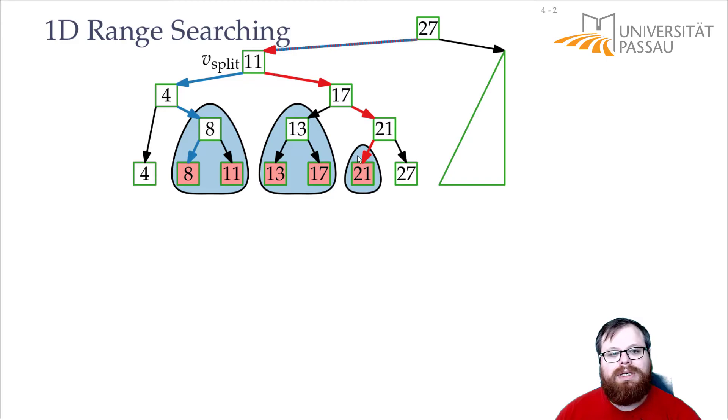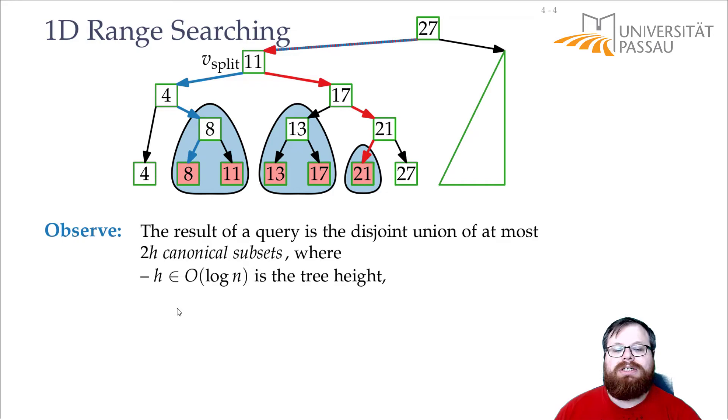So all these sets here we know we have to report. And those we call canonical subsets. And how many of these do we have? At every step that the blue path takes, at every level there might be one of those. And at every level that the red path takes, there might also be one of those. So we have at most 2h canonical subsets, where h is the height of the tree.